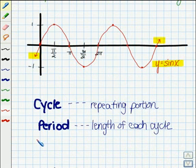Now, let's look at a couple of terms relating to periodic graphs. You see that, first of all, the repeating portion, or the shortest repeating portion, the part that keeps going over and over, that's the cycle.